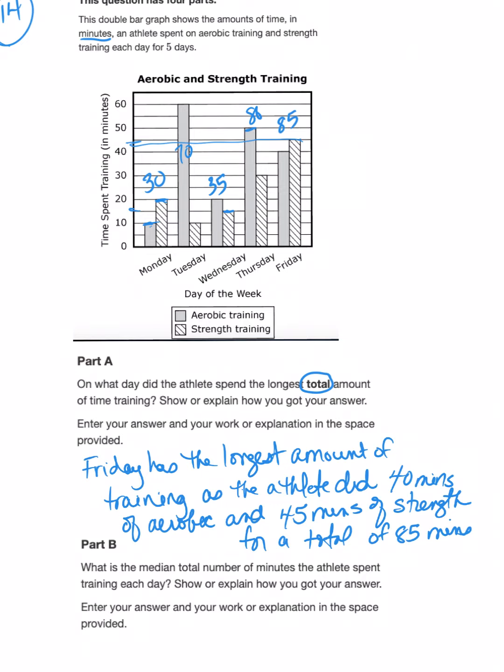Now that's if you want to explain it in words. You could also write it as: aerobic plus strength equals total training time. Then you could put just the numbers in: 40 plus 45 equals 85 minutes. Either one of these is correct; it's just a matter of preference.